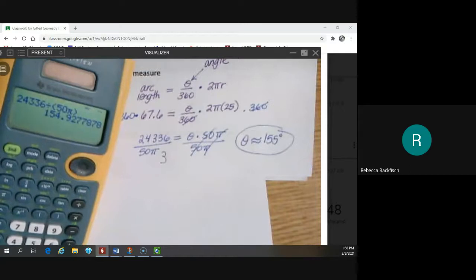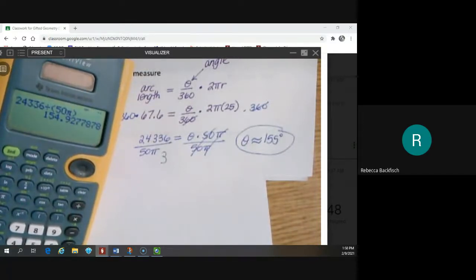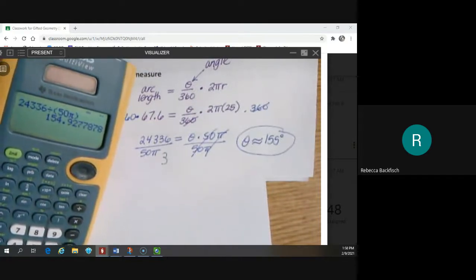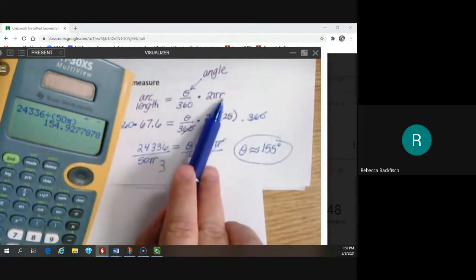Be careful when you put this in your calculator. You have to make sure the 50 pi stays together. So like parentheses 50 pi. And I get about, I'm going to go ahead and round this to a degree, whole degree, about 155 degrees. So when the thing that we are being asked for is not the arc length, it's a little bit messier to solve the equation. But we just plug in all the stuff that we do know and then solve for whatever it is we don't know. And if it's the angle we don't know, that's the theta. Sometimes it's the radius we don't know.